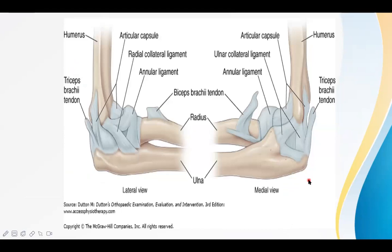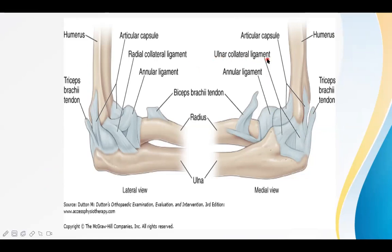The stability of the elbow joint is provided by the medial collateral ligament (also called ulnar collateral ligament), lateral collateral ligament (radial collateral ligament), the annular ligament which encircles the joint, and the joint capsule. These ligaments work together to keep the elbow stable.